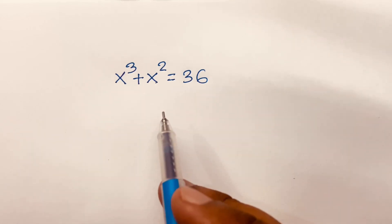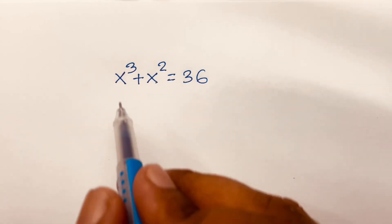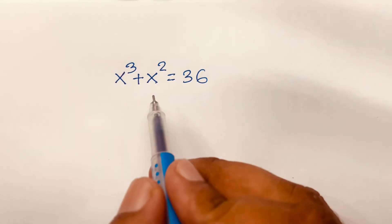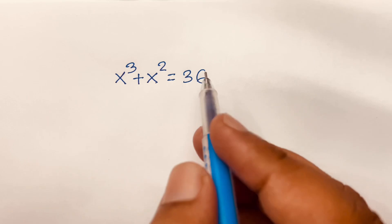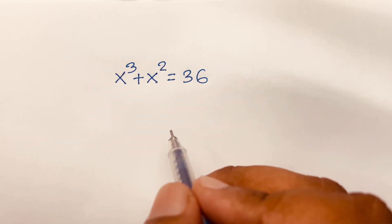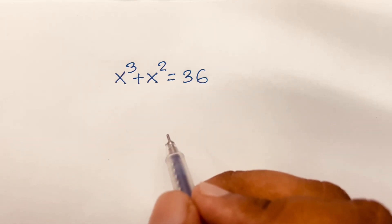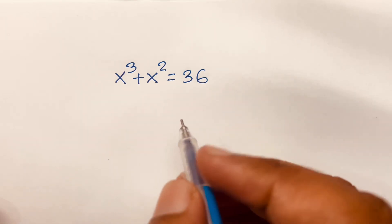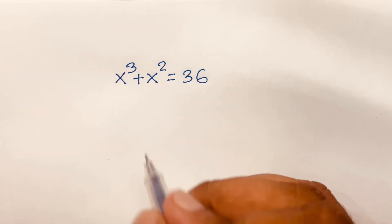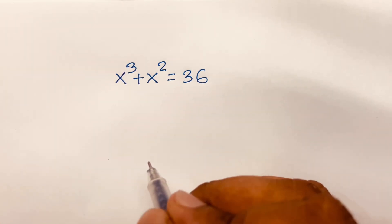How to solve this exponential equation? x to the power 3 plus x squared is equal to 36. We are finding out what is the value of x in this equation.